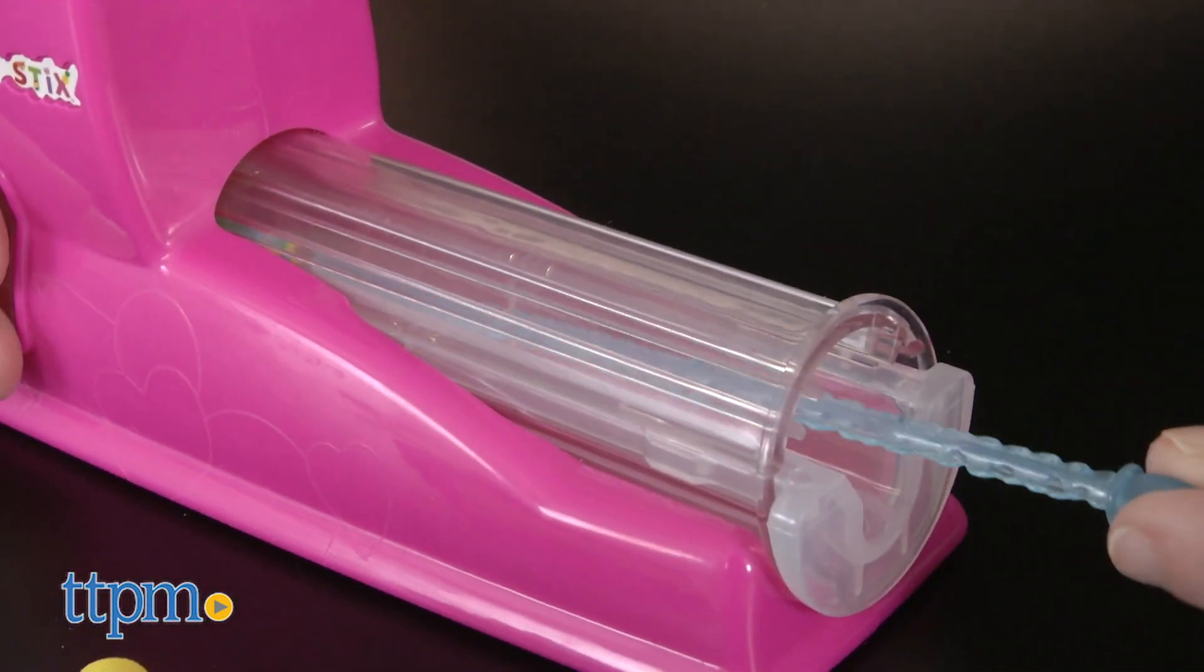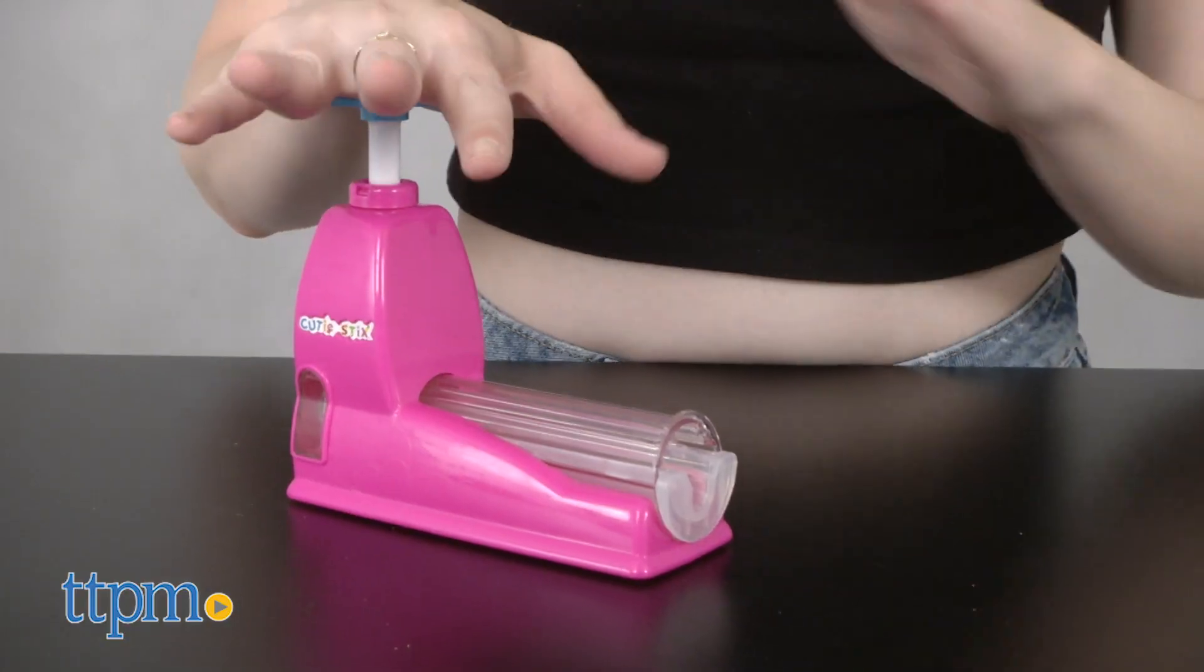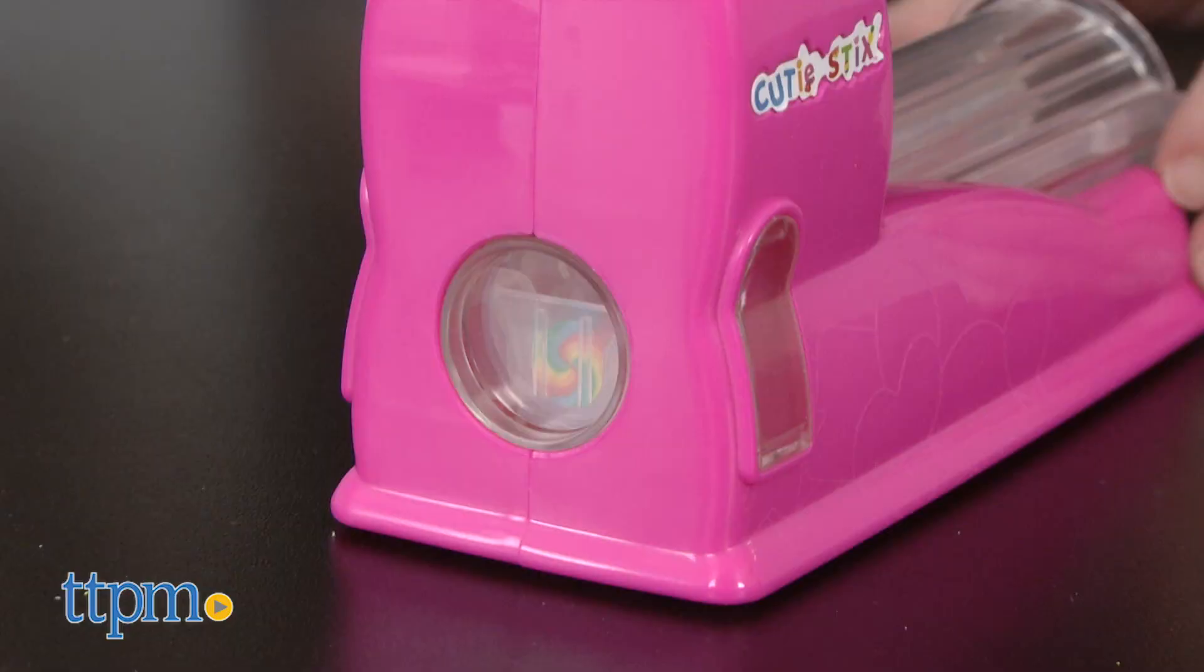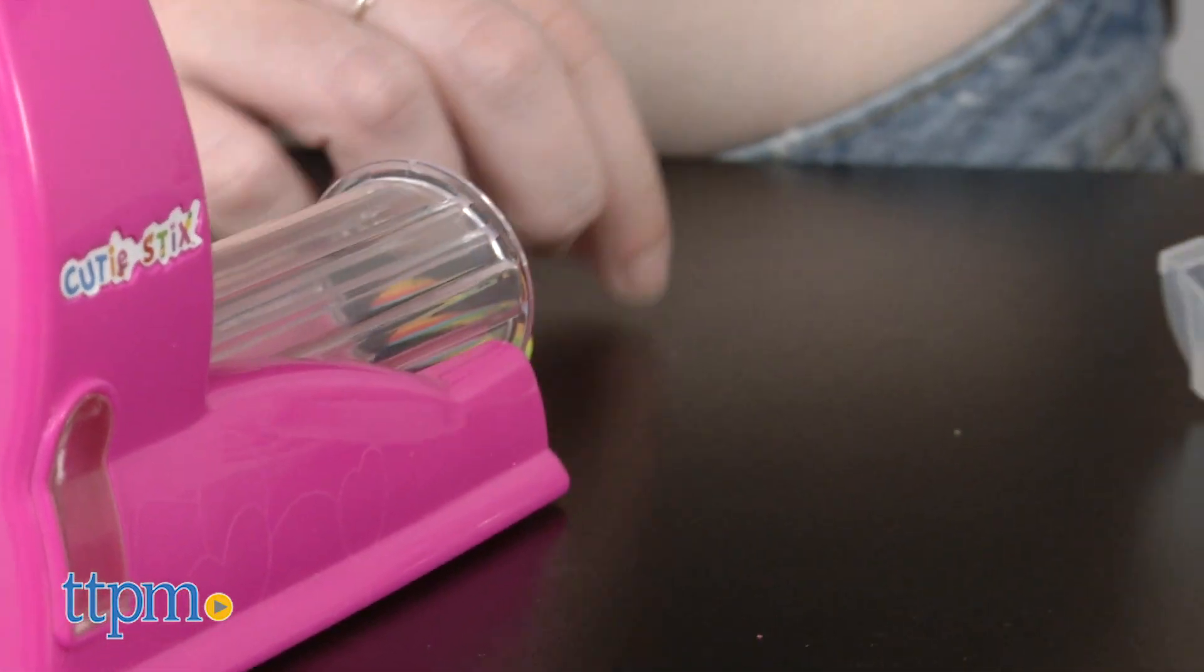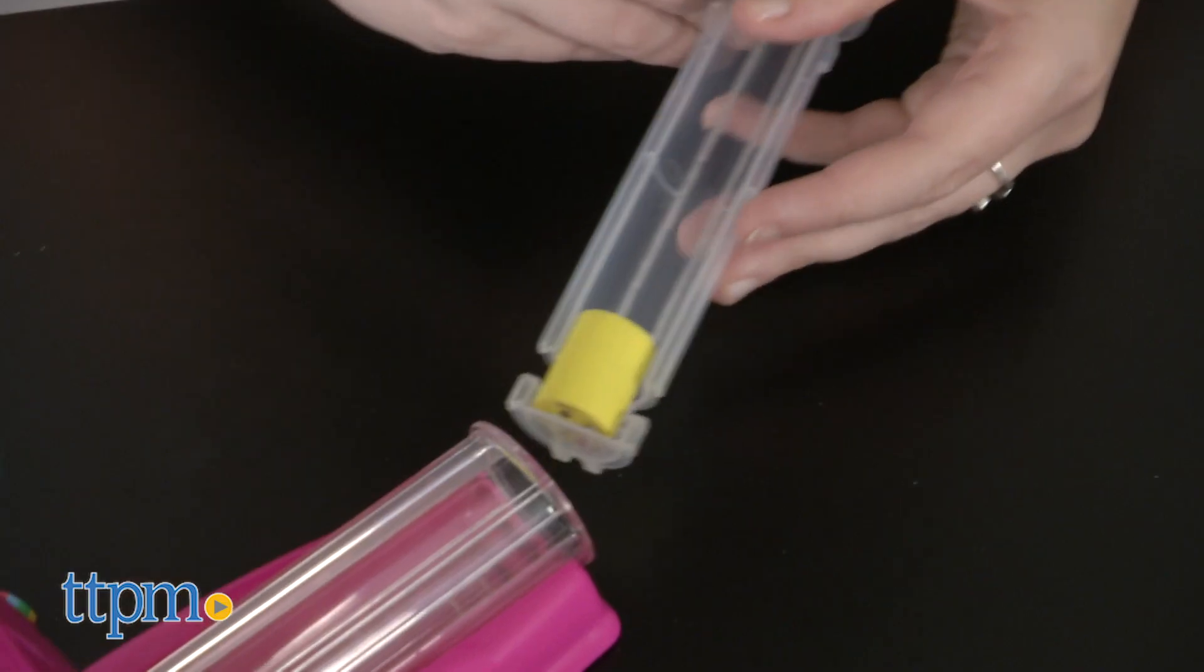Simply insert the necessary frame based on which size sticks you are cutting, insert the sticks ensuring it's all the way to the end of the device, and then press down to cut. Tilt or pull the frame out to remove your bead.